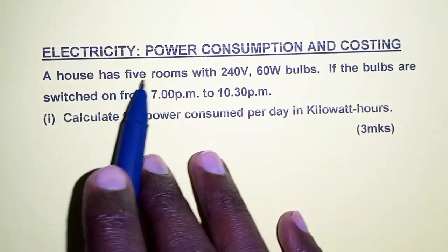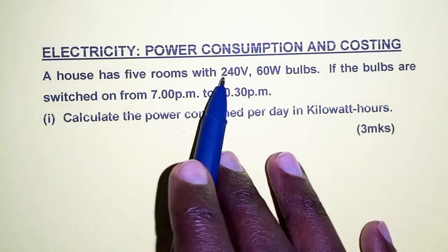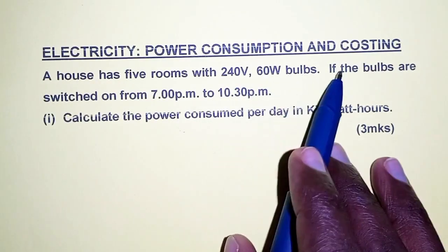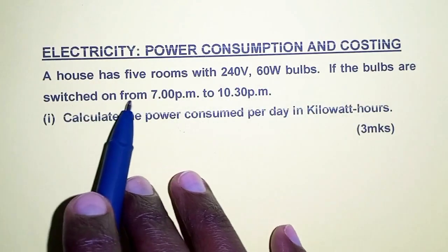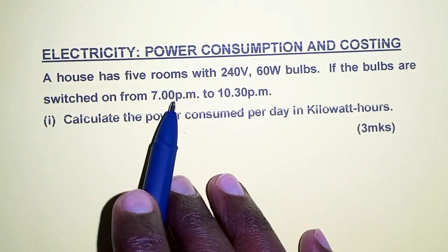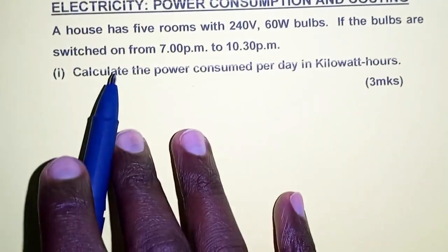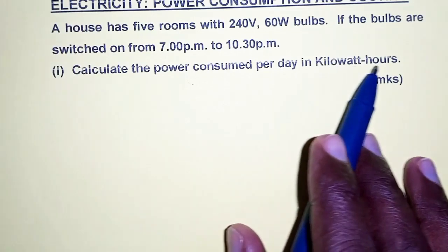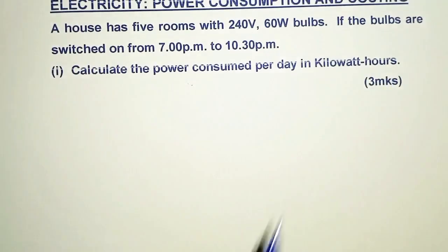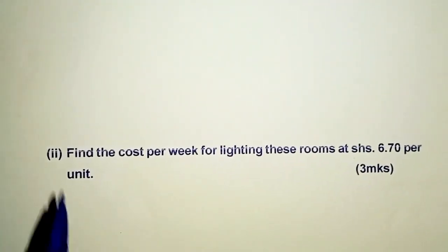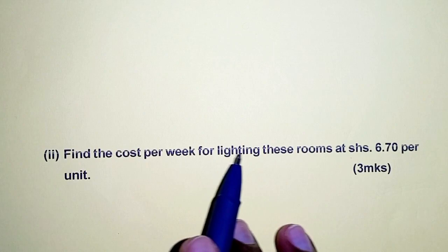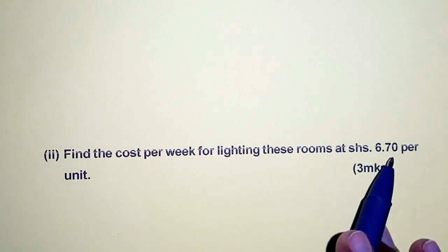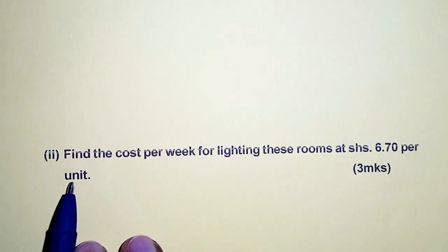A house has five rooms with 240 volts, 60 watts bulbs. If the bulbs are switched on from 7 p.m. to 10:30 p.m., then part one: calculate the power consumed per day in kilowatt hours, and part two: find the cost per week for lighting these rooms at a cost of 6 shillings and 70 cents per unit.